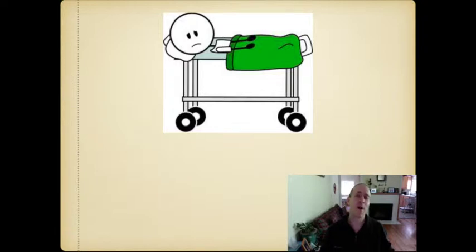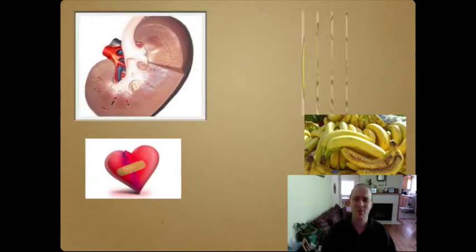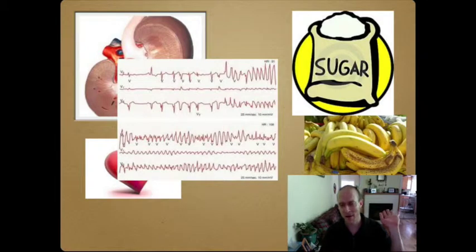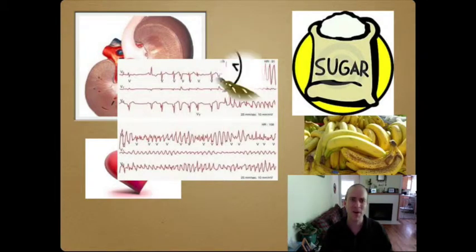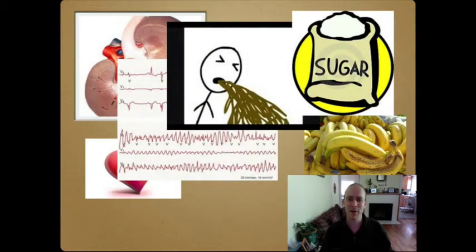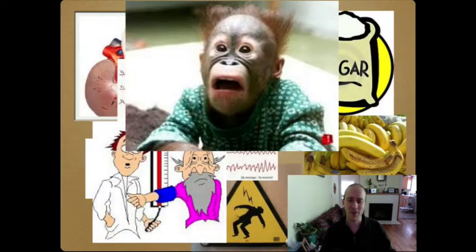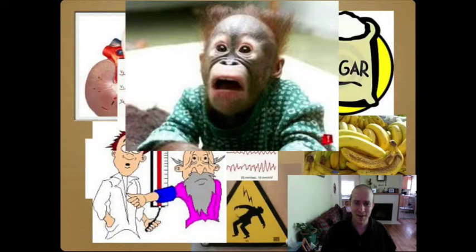He presented with a host of complaints including high potassium heart failure, his kidneys were shutting down, he had diabetes, his heart was going into different arrhythmias, he was vomiting blood, he was in shock, his blood pressure was out of control and this is how I looked as I was trying to make sense of all these problems.